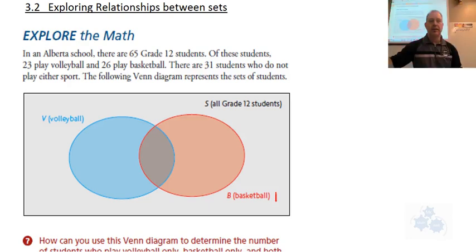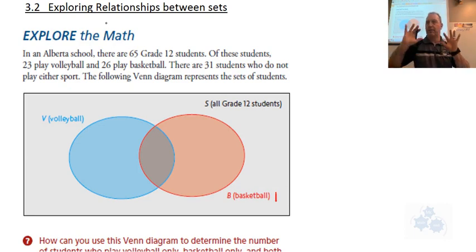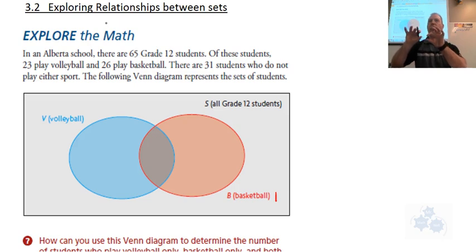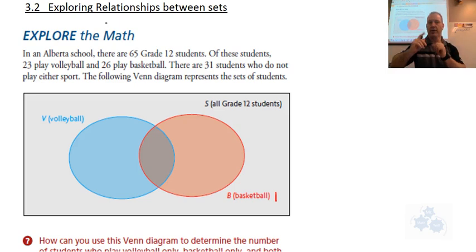Today's lesson is 3.2, exploring relationships between sets. So if we have a set of things that are not connected at all, what are those sets called? That's the review from 3.1. Disjoint sets, right. And if sets are overlapping, they are not disjoint.